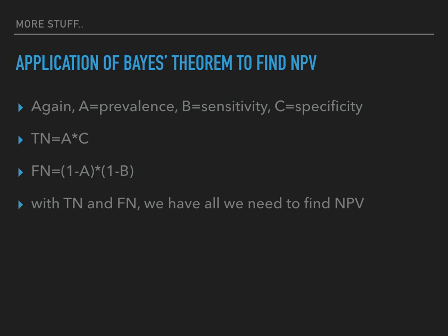Now for the application of Bayes Theorem to find the NPV. A, B, and C have the same meaning: A is the prevalence of the disease in the community, B is the sensitivity of the test, and C is the specificity of the test. The probability of finding a true negative is A times C — prevalence times specificity. The probability of finding a false negative is 1 minus A times 1 minus B — 1 minus prevalence times 1 minus sensitivity. Negative predictive value is found by dividing true negatives over true negatives plus false negatives.